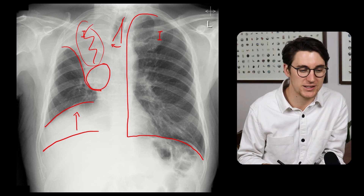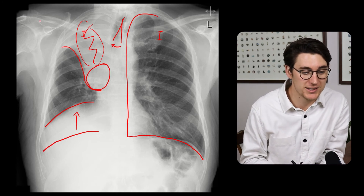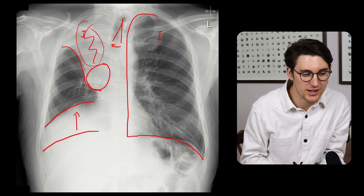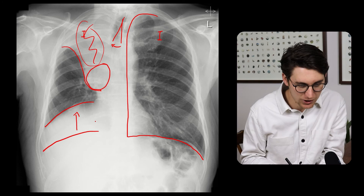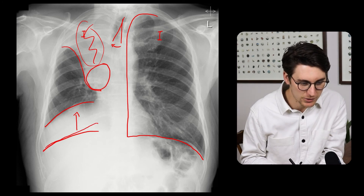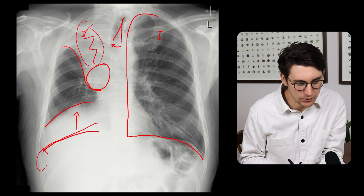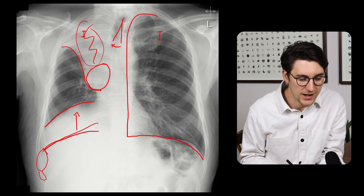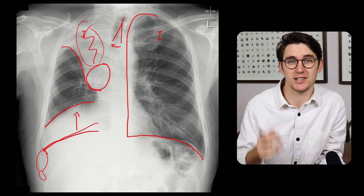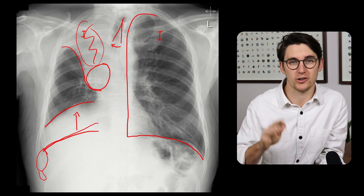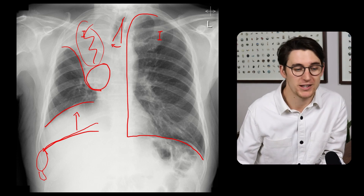We need to look for features of metastatic disease, and sure enough, if we look at the distal clavicle here, we can see that this distal portion has a lucent or lytic lesion. As well, looking at the 10th rib as we follow it down, we lose the cortex here and can't see the 10th rib before it continues again — another feature of potential metastatic disease.